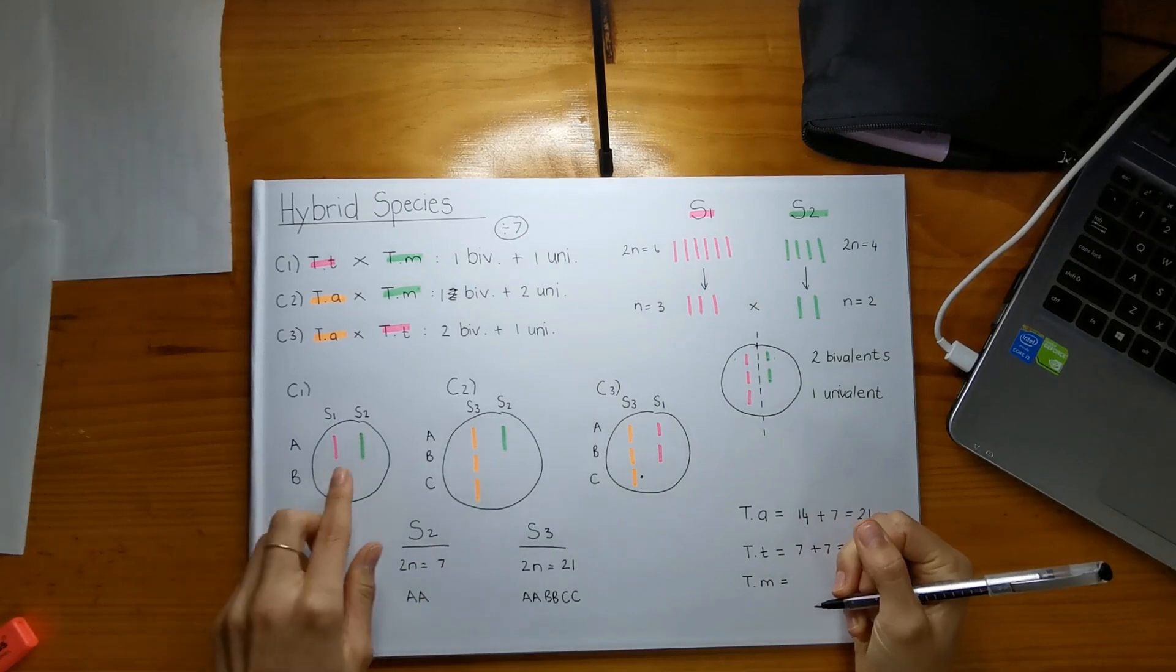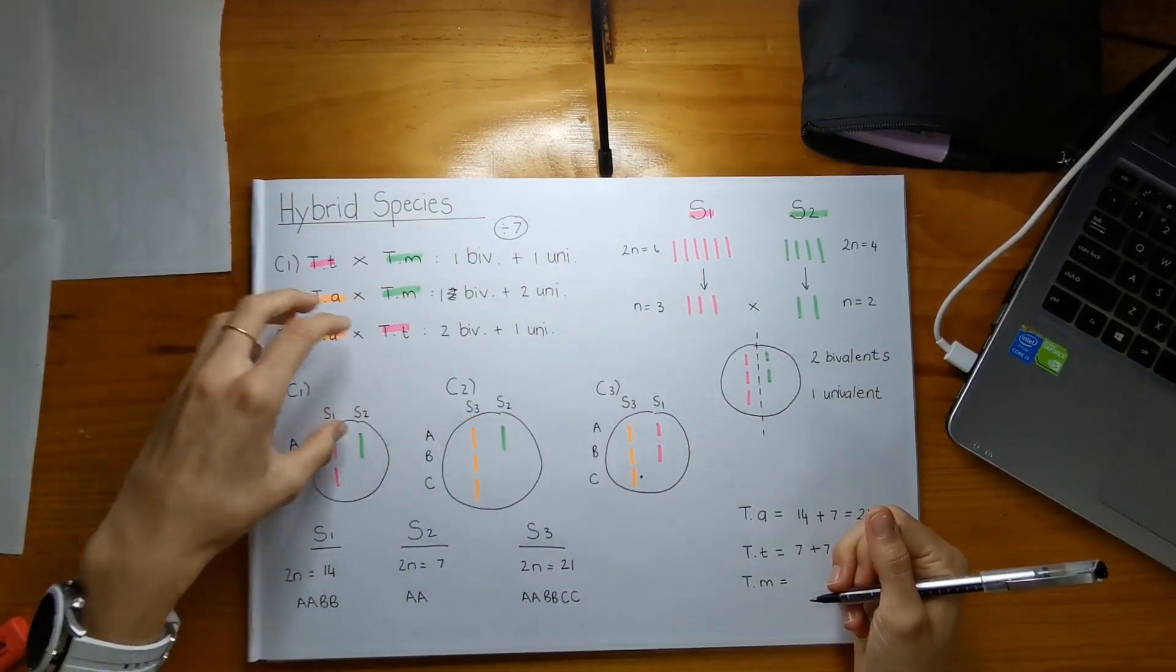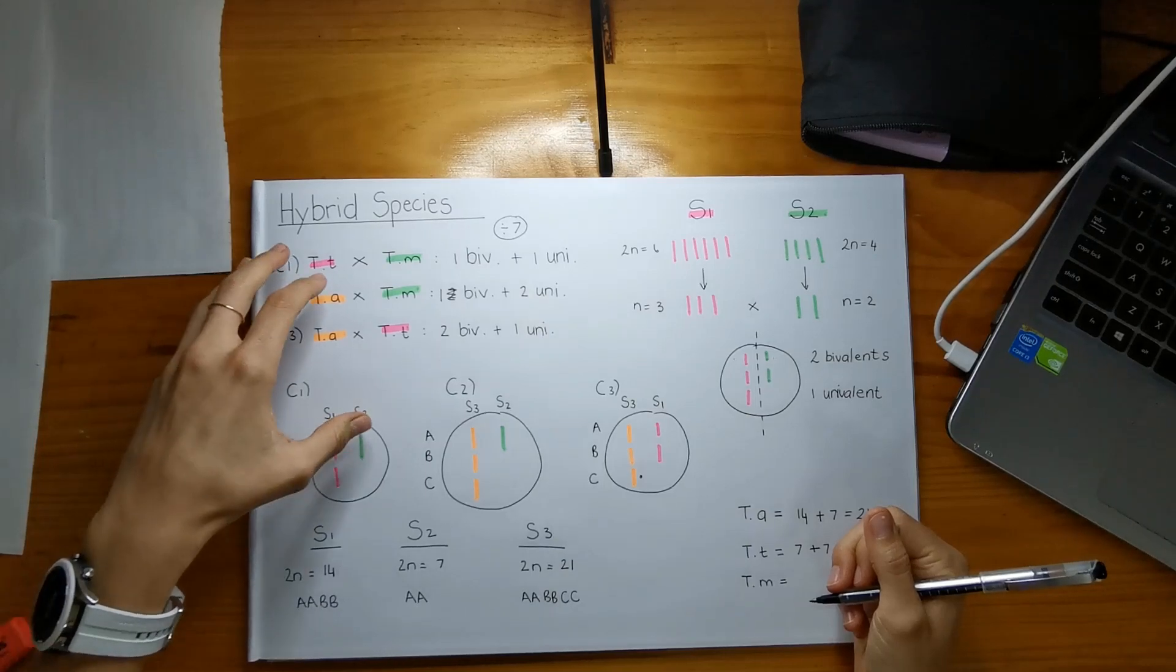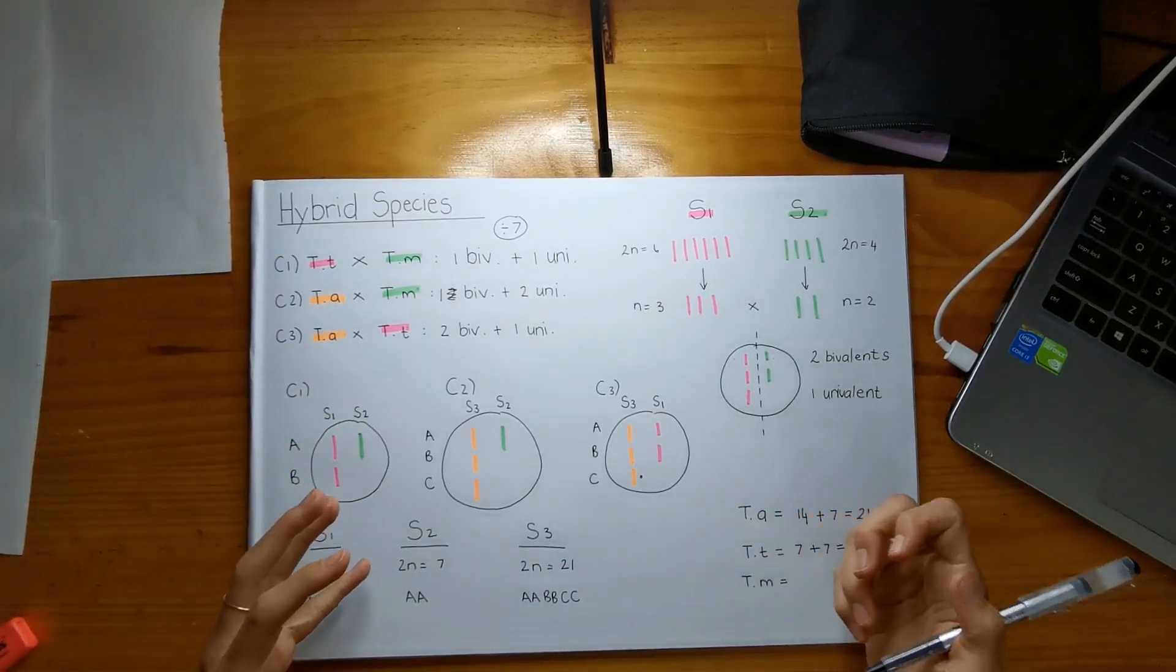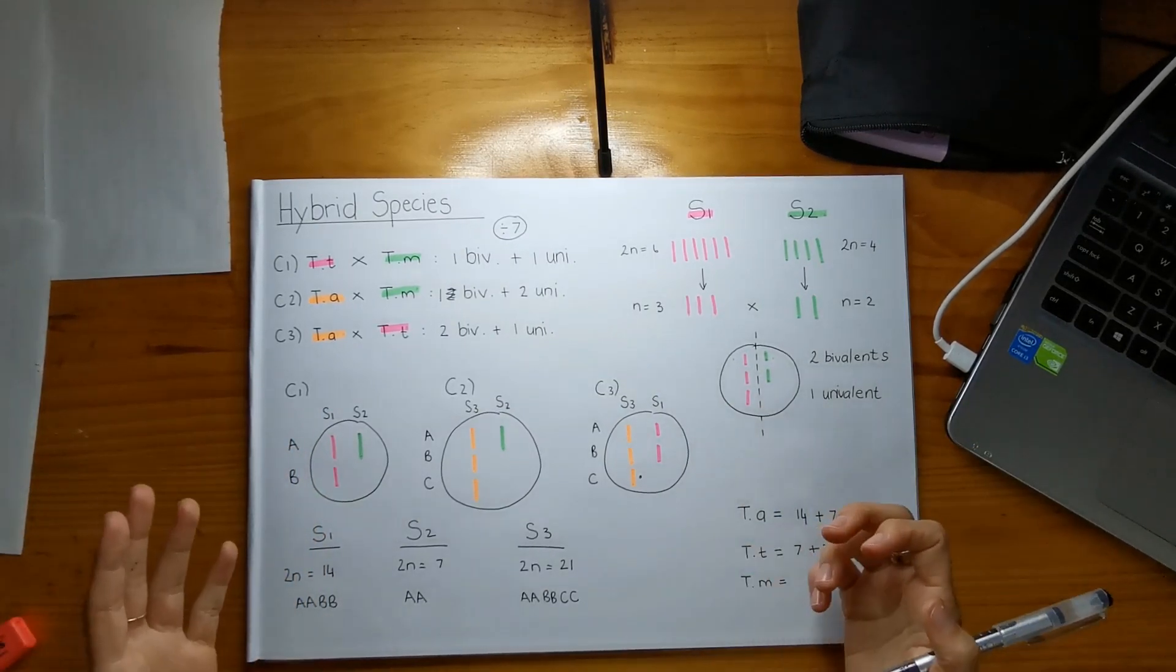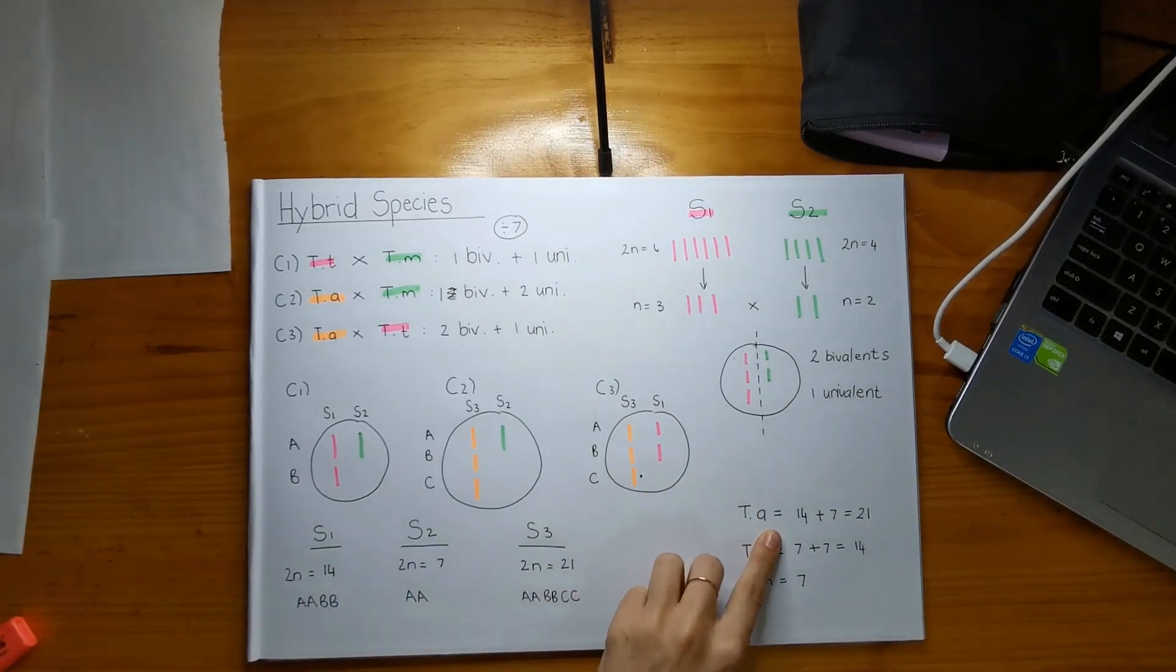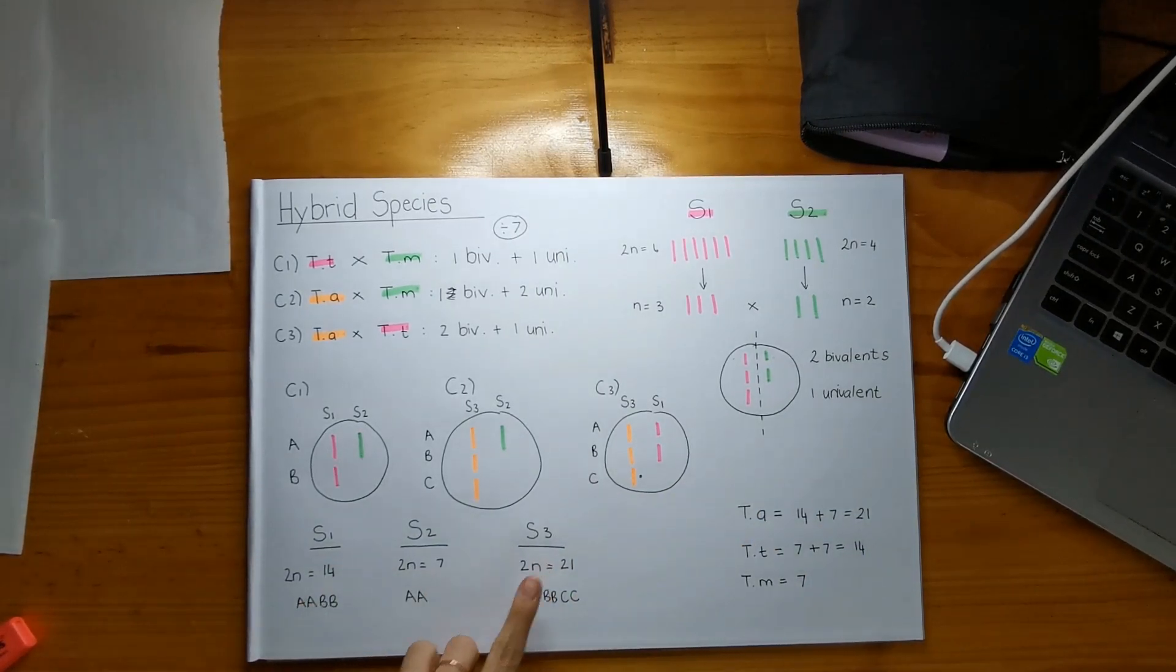And then let me just do the last one just for the fun of it. The last one only in all the cases that it's been with, when it's been crossed with another species, it's only formed one bivalent, meaning that there was 14 in the bivalents, but because you divide it by two, there's only seven left over. And that's how you actually do the maths to know what the somatic numbers are.